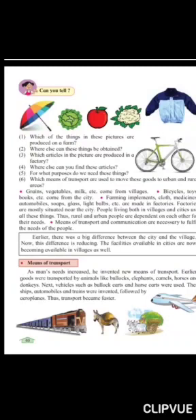What else can things be obtained from? A lot of things can be obtained from the farm — rice, strawberries, vegetables, fruits, and lots of things. Which articles in this picture are produced in a factory? Looking at the photo, umbrellas, cycles, and clothes are produced in the factories.